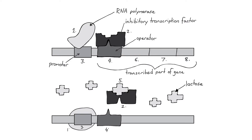So when there isn't much lactose, a repressor protein — a type of DNA binding protein — sits on a specific region of the lac operon called the operator region. When this repressor is bound to the operator, it prevents RNA polymerase, the enzyme responsible for transcription, from binding to the promoter, and thereby prevents the genes from being transcribed.